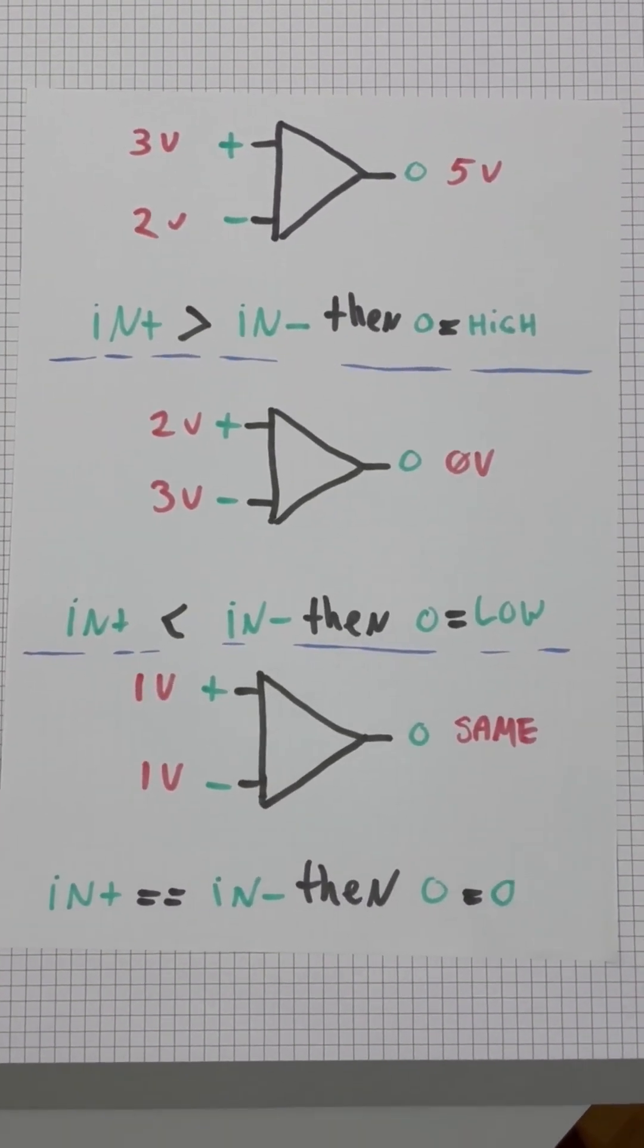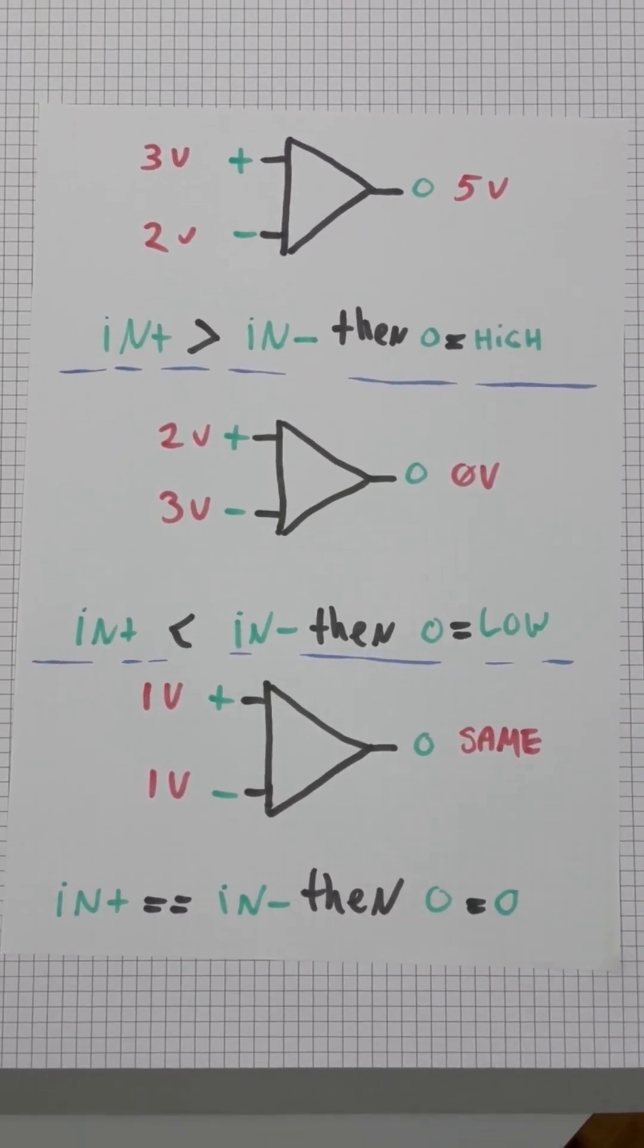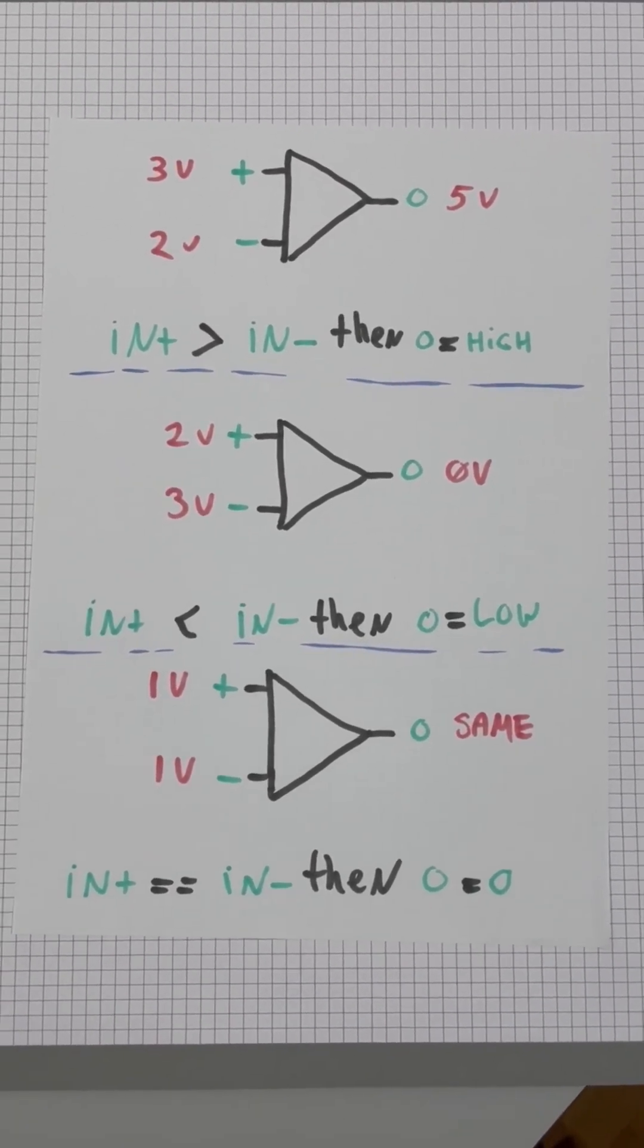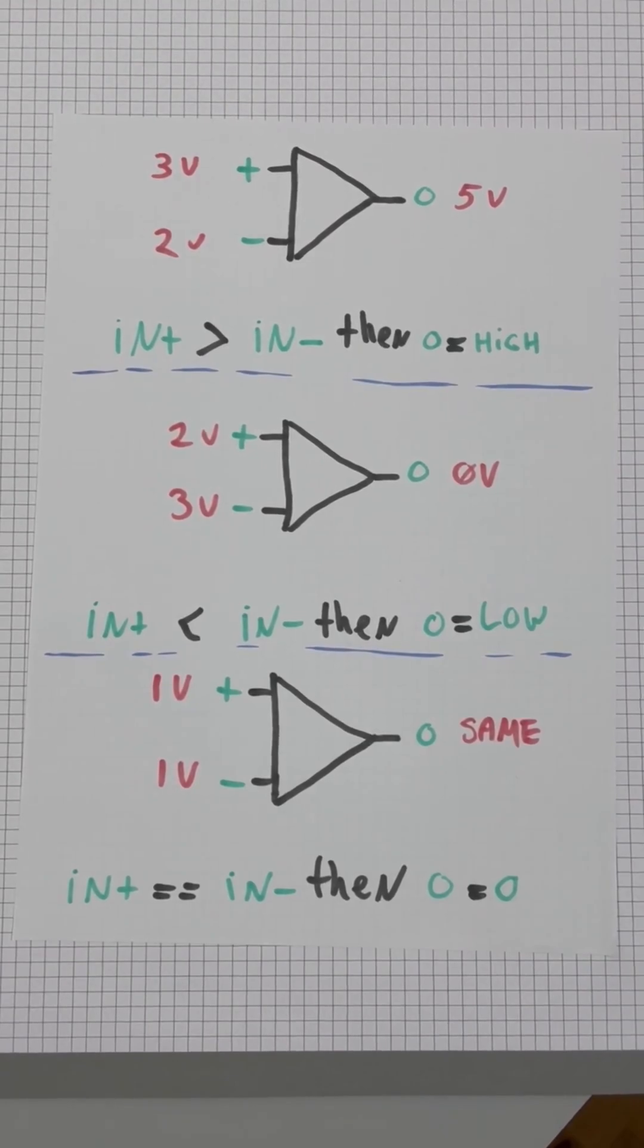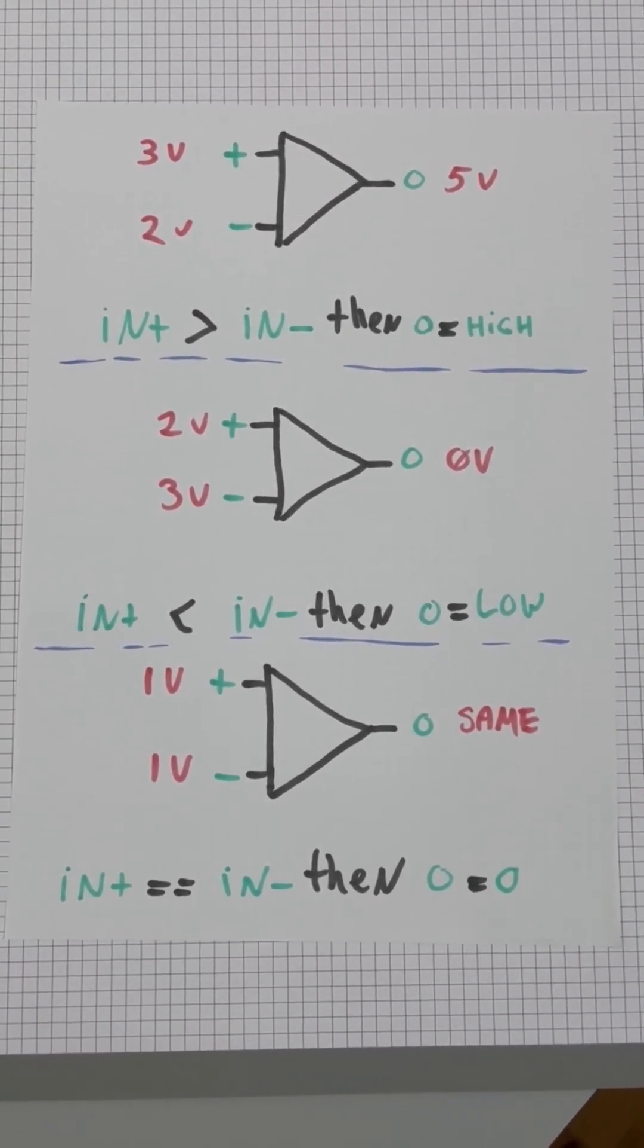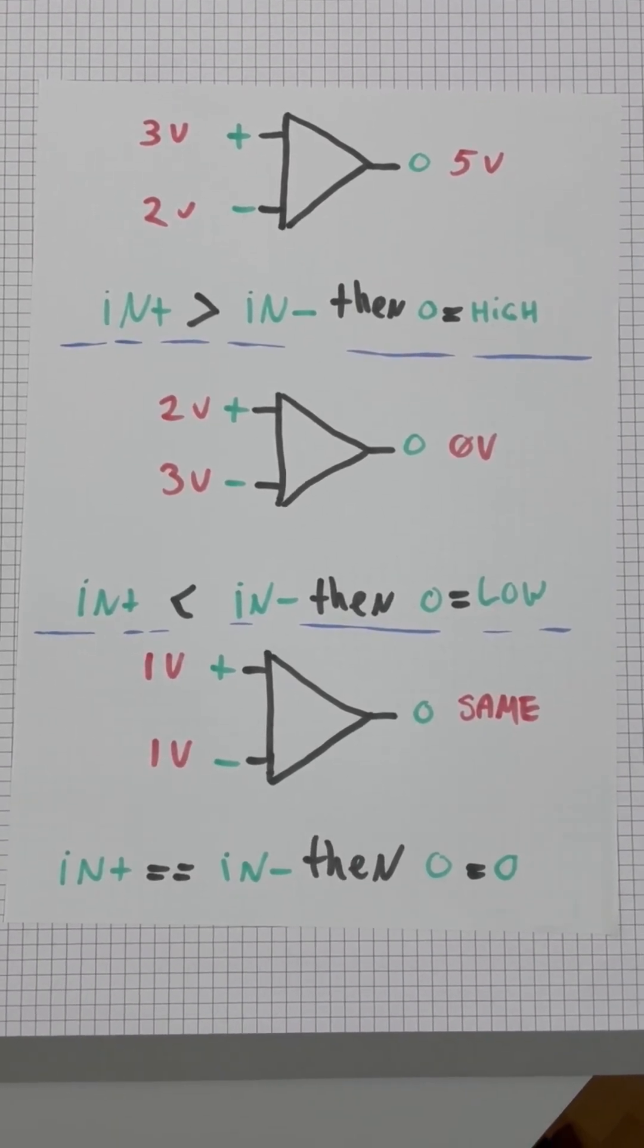A generic op-amp, which this is, follows the following conditions. When the voltage on the positive input is higher than the voltage on the negative input, the output goes high. When the voltage on the positive input is lower than the voltage on the negative input, the output goes low.